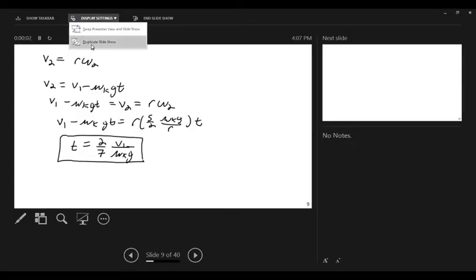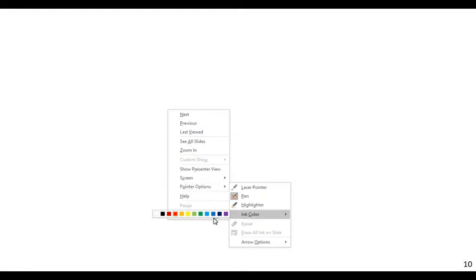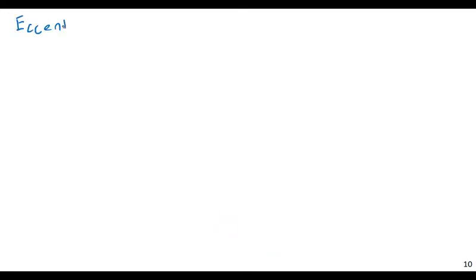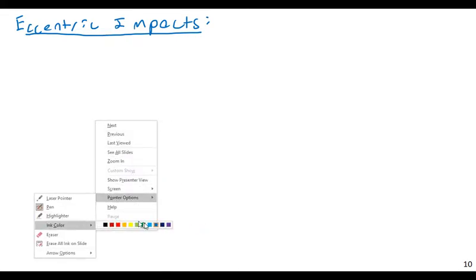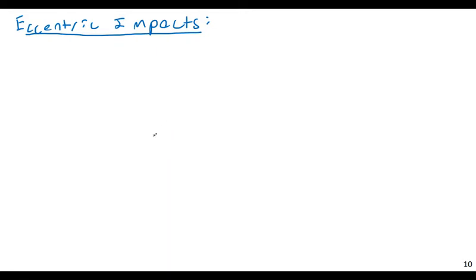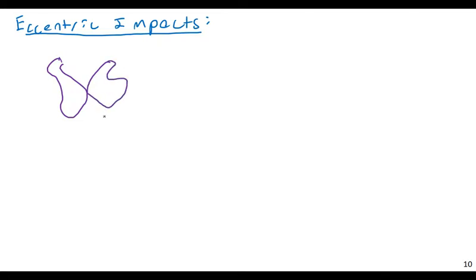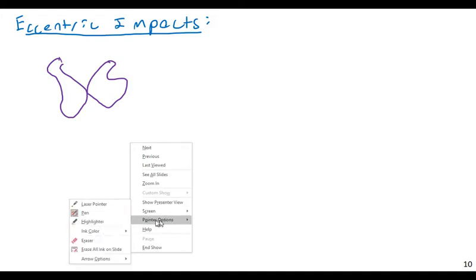We've looked at impacts previously, and those are mainly analyzed through conservation of momentum. So let's consider eccentric impacts — consider two generalized two-dimensional plane bodies, two rigid bodies. I'll just draw them as potatoes. So let's say we have some eccentric impacts where two objects are coming together.